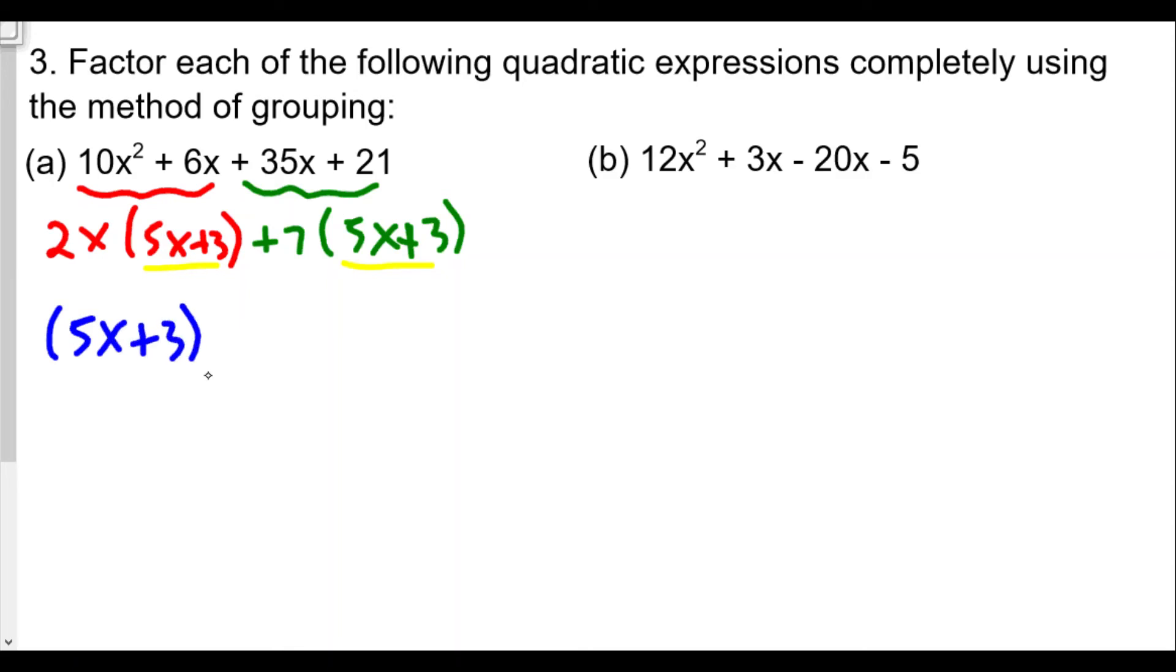So a GCF is not just a single term, it could be a binomial. Now if we factor out the (5x + 3), we're left with 2x in the front and plus 7 at the end.